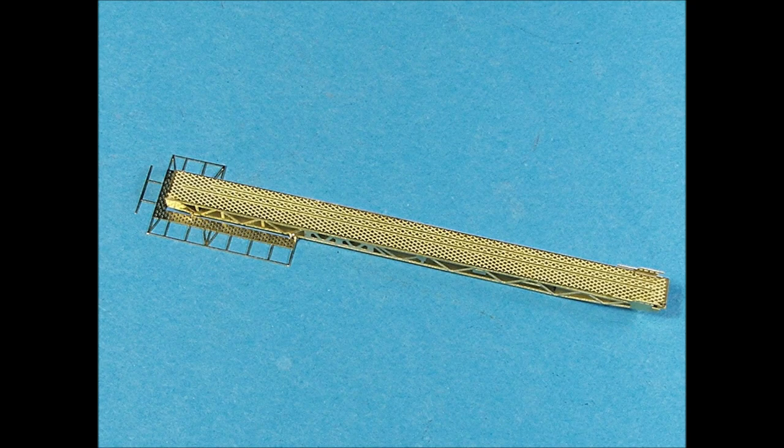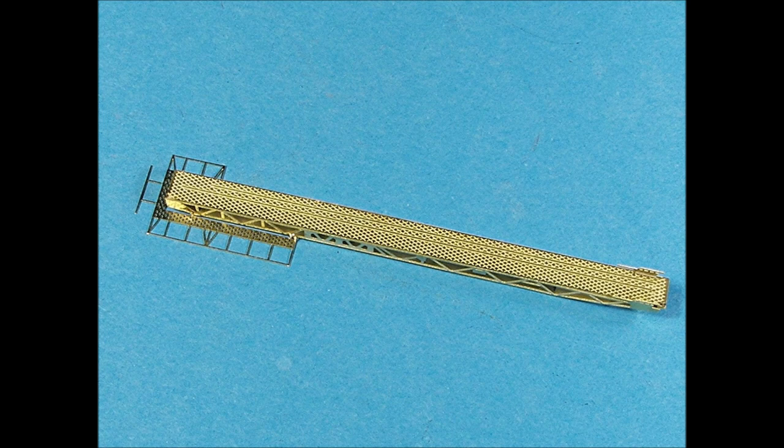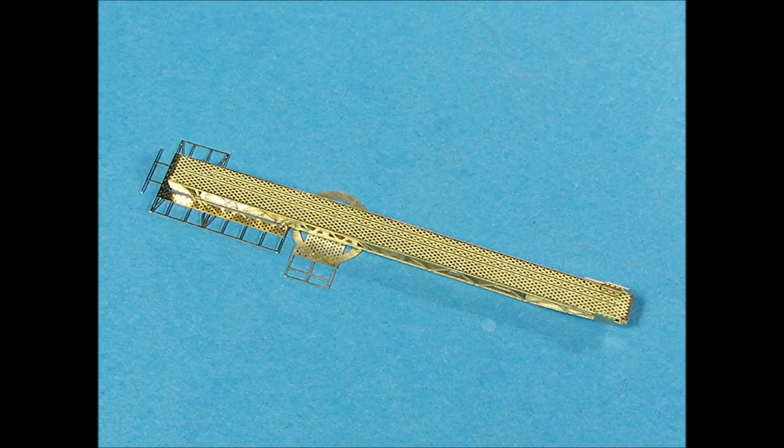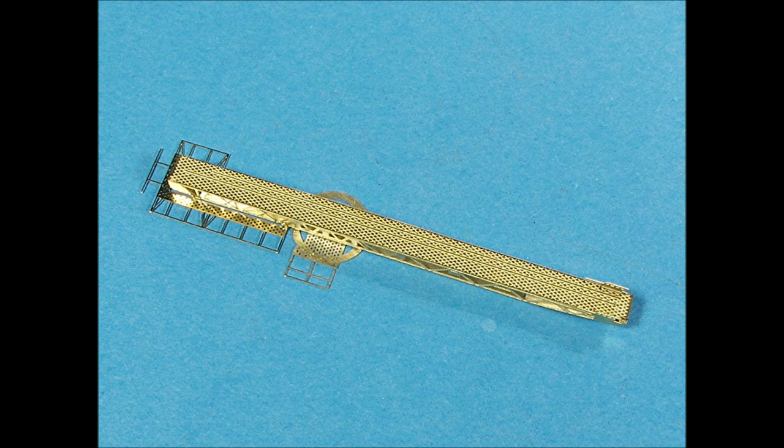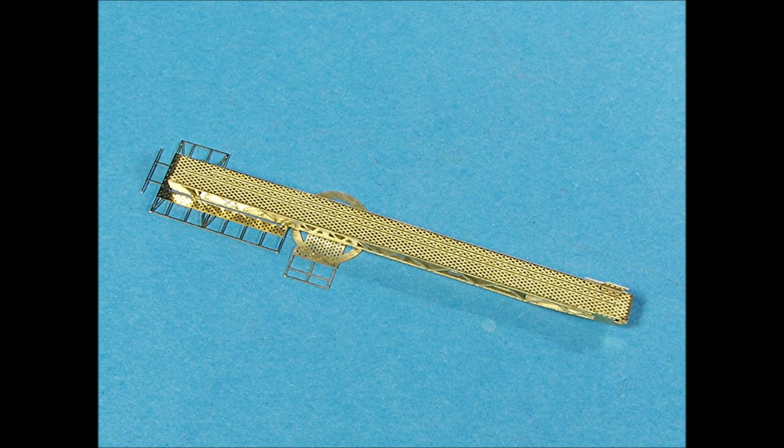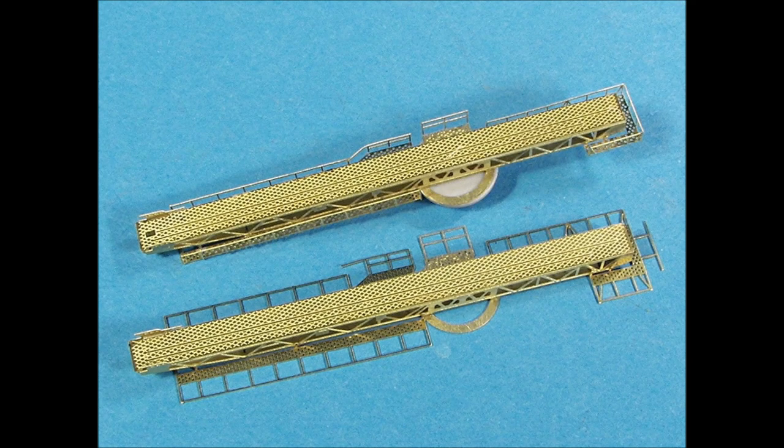Attach the platform parts first, and then bend up the railings. The tiny tabs on the inside lips of the platforms are bent up 90 degrees, and then the part is slipped into place and glued using the tiny stubs for positioning the platforms. The center section is added next. There is a positioning hole on the underside of the catapult and in the circular part for alignment, and it also needs to be set straight along the length of the catapult.